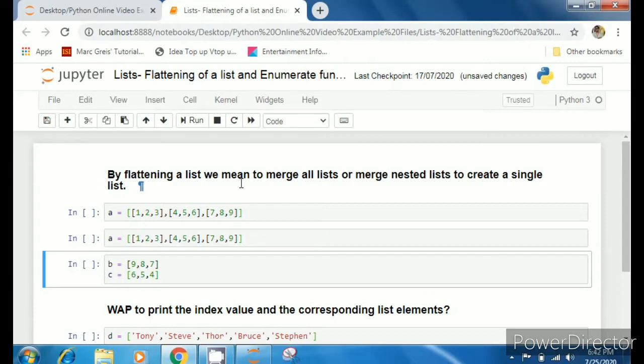Flattening is a term which is used to generate a single list by merging so many lists. The term is equally applicable for nested lists. A nested list is something which is a list within a list.